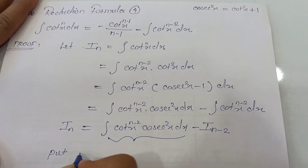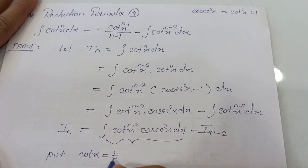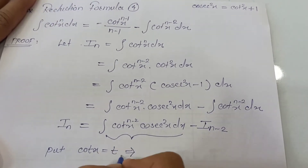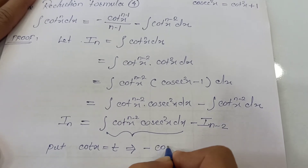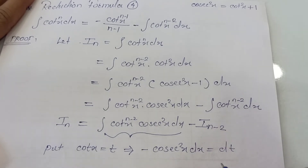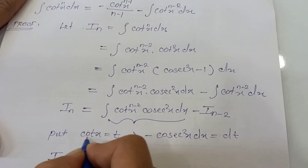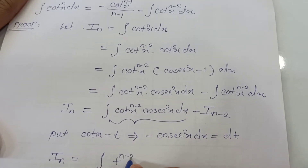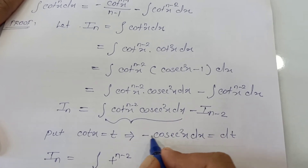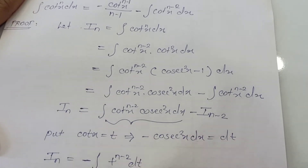To evaluate the first integration we use the method of substitution. We put t equals cot x. Taking the derivative of both sides gives minus cosec squared x dx equals dt. So cosec squared x dx equals minus dt. Substituting, we get integration of t raised to n minus 2 times minus dt.